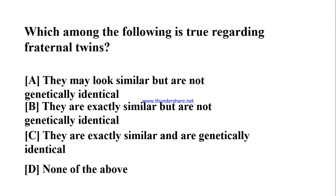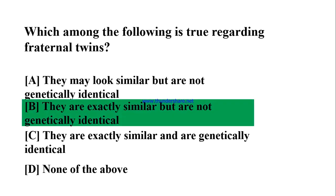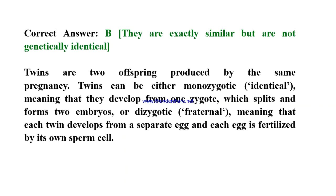Which among the following is true regarding fraternal twins? A) They may look similar but are not genetically identical; B) They are exactly similar but are not genetically identical; C) They are exactly similar and genetically identical; D) None of the above. Correct answer: B. Twins can be either monozygotic (identical), developing from one zygote which splits into two embryos, or dizygotic (fraternal), where each twin develops from a separate egg fertilized by its own sperm cell.